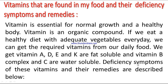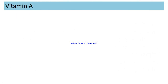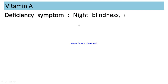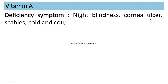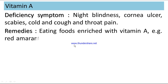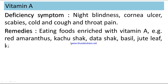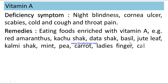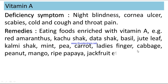Deficiency symptoms of these vitamins and their remedies are described below. Vitamin A — deficiency symptoms: night blindness, cornea ulcer, scabies, cold and cough, and throat pain. Remedies: eating foods enriched with vitamin A, e.g., red amaranths, kochu shak, datashak, basil, jute leaf, kolmishak, mint, pea, carrot, lady's finger, cabbage, peanut, mango, ripe papaya, jackfruit, etc.